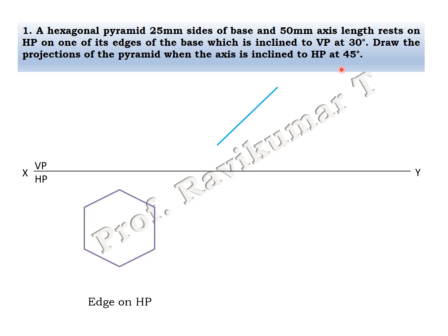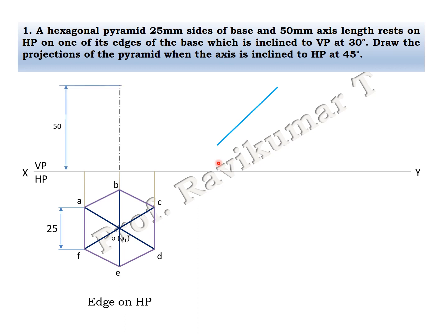First condition: edge on HP. If you look from the top of the object, the hexagonal base looks like a hexagon with all diagonal lines visible. This is the top view. Draw projection lines upward, then take height as 50mm and join. Do the naming: D is visible, C is invisible, E is visible, B is invisible, O is invisible, F is visible, A is invisible. This completes the first position.